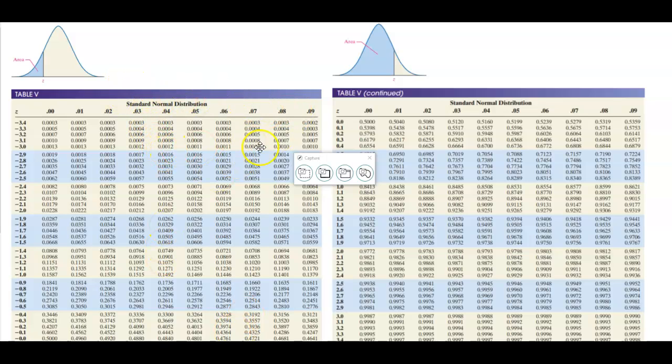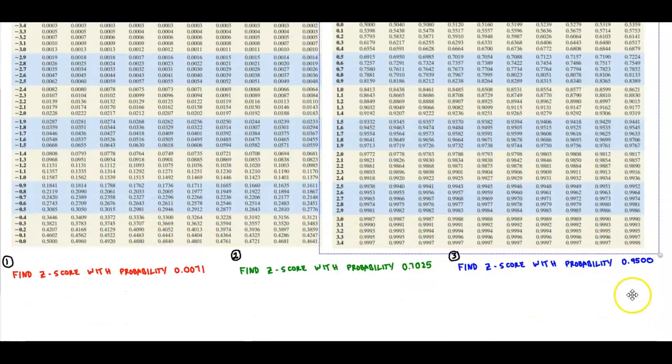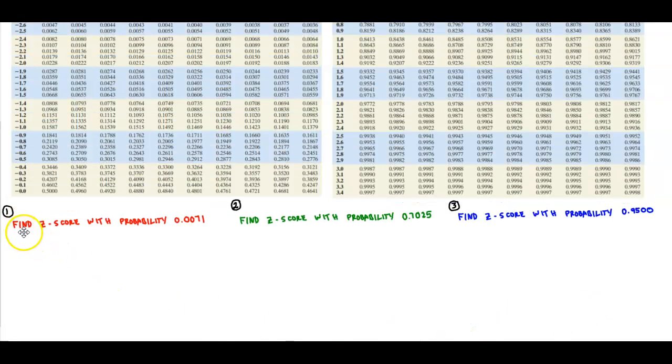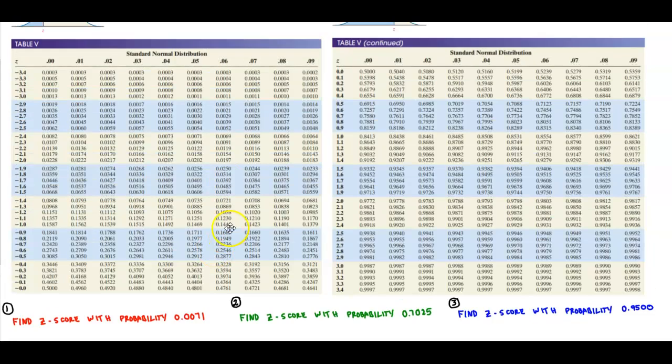Okay, in this video what we want to do is we want to be able to use the areas or the probabilities or the proportions to find a z-score value on a table. So we have our three examples down here that we're going to use. The first example is to find a z-score with a probability of 0.0071. So what we have to do is we have to come in here and look for the probability where it says 0.0071.